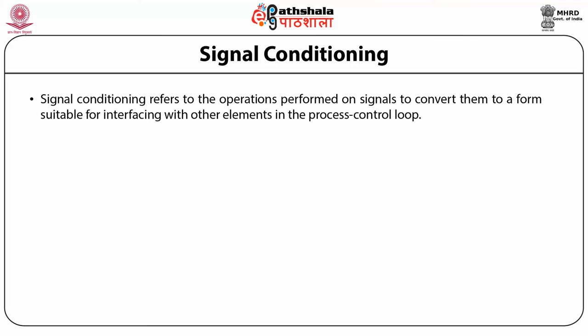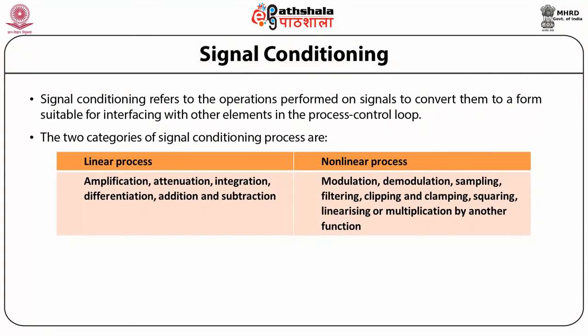Signal conditioning refers to the operations performed on signals to convert them to a form suitable for interfacing with other elements in the process control loop. The two categories of signal conditioning processes are: first, linear processes — that is amplification, attenuation, integration, differentiation, addition and subtraction.